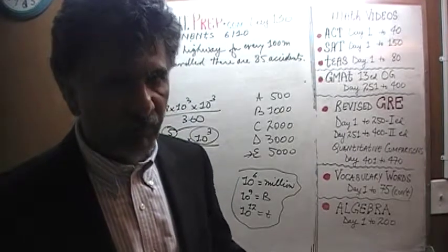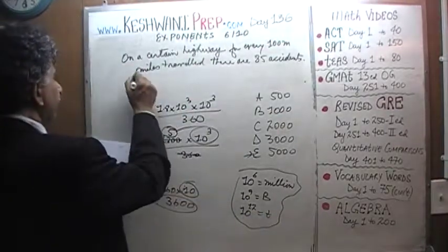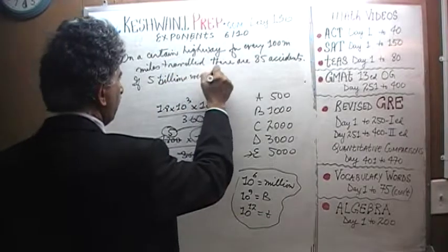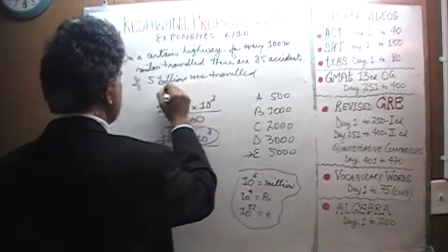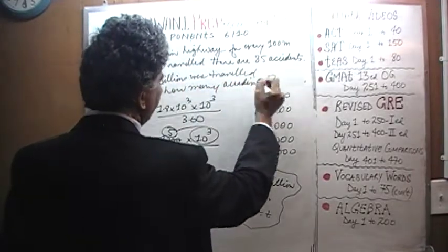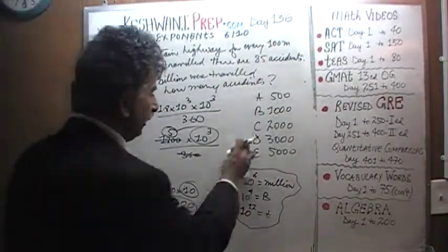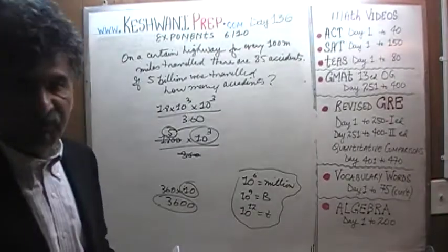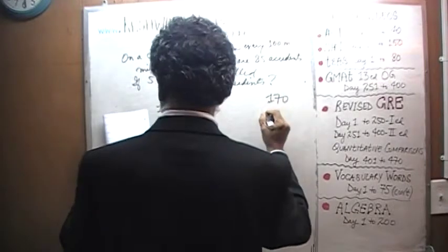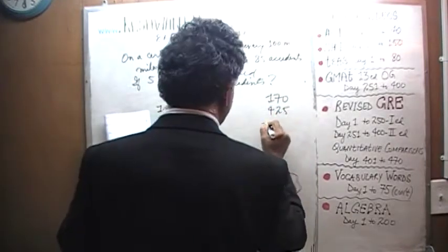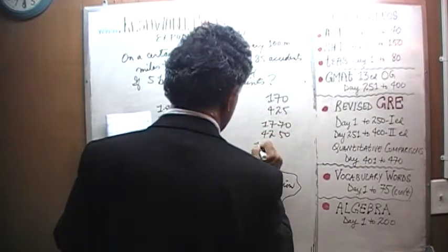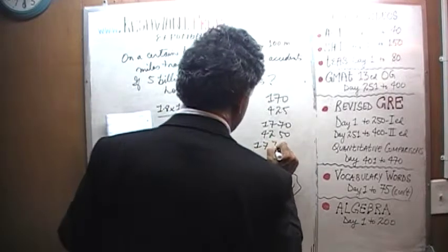85 vehicles are involved in accidents in a given year. The question simply is, if 5 billion miles were traveled, how many vehicles were traveled on the highway? The question is, how many vehicles would we expect to be involved in the accidents? So here are the answer choices: 170, 425, 1770, 4250, and finally, 17700.